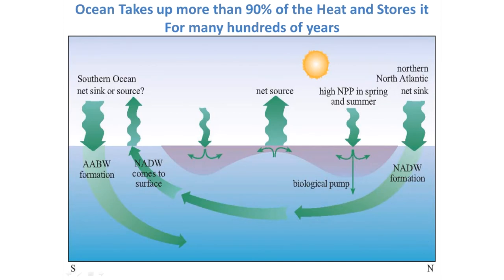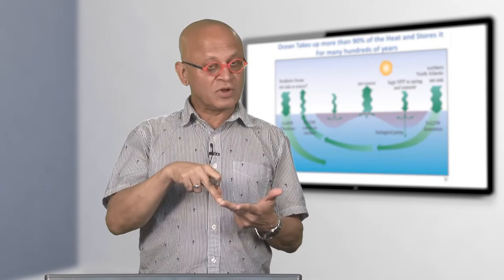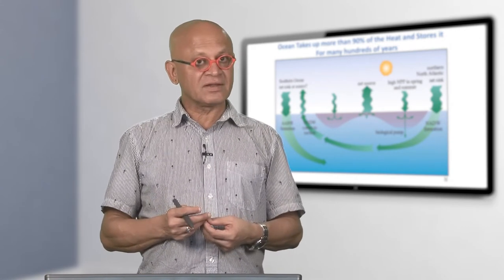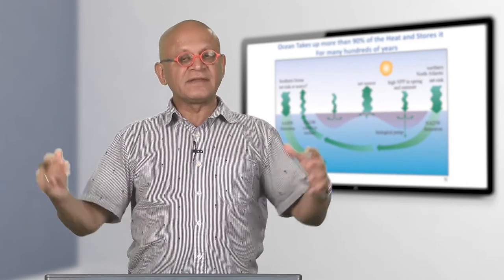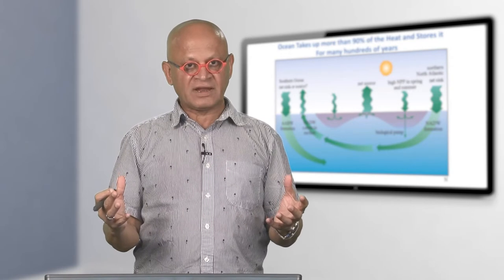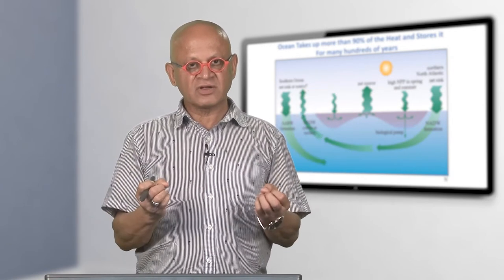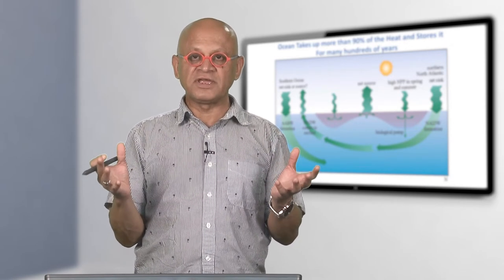When this water sinks from the surface, it takes everything with it — heat, carbon dioxide, oxygen, and other chemicals or organic matter. Because the ocean is so deep, this water takes up to 1500 years to come back up, and some water is even older. This is why the ocean takes up most of the carbon dioxide and about 90 percent of the heat generated by human activities, meaning global warming is heavily controlled by what the ocean does. If the ocean were to stop taking up carbon dioxide or heat, global warming could accelerate.